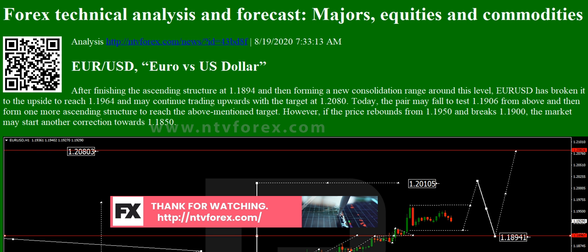USDRUB: USD/RUB is still consolidating around 73.33 without any particular direction. According to the main scenario, the price is expected to fall and break 72.82. After that, the instrument may continue trading downwards with the short-term target at 71.91.